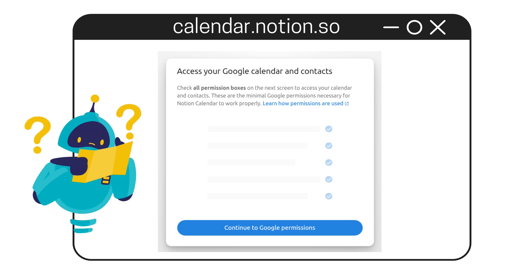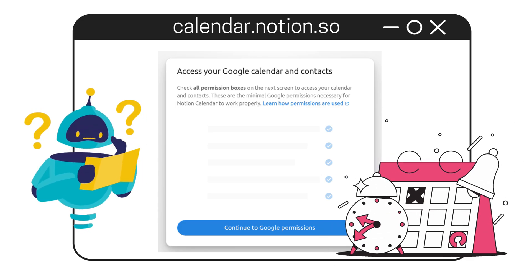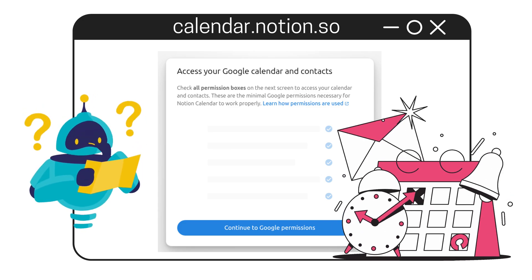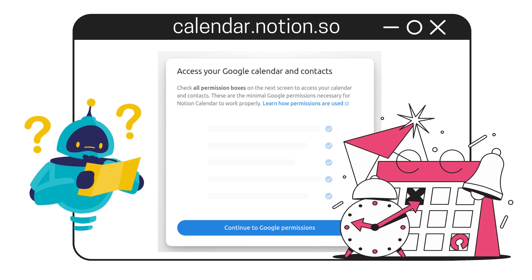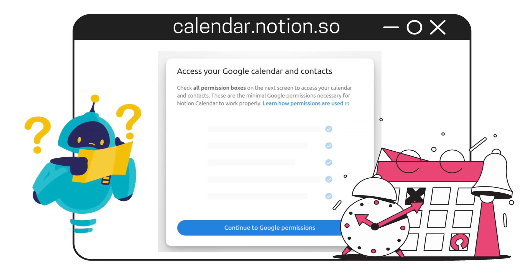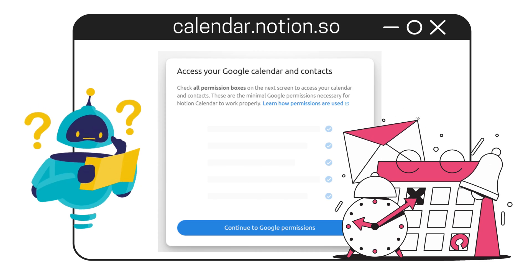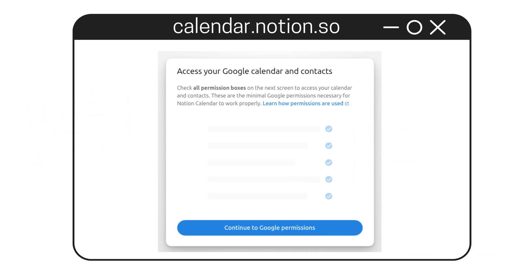Why ask for contacts in the first place? Notion Calendar might use them to autocomplete names when you invite people to events, or to help connect meetings with people in your network more easily.